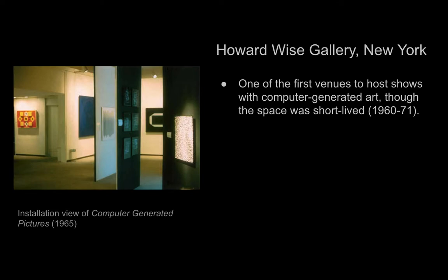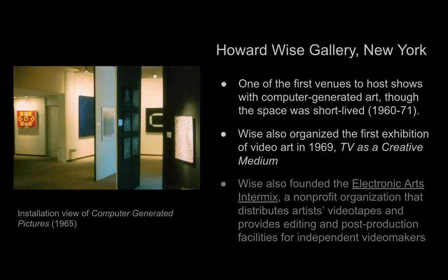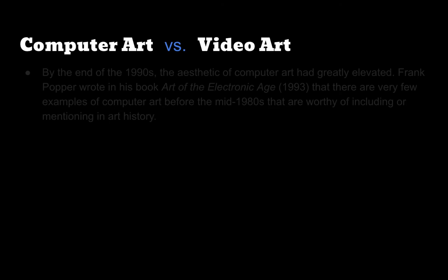The Howard Wise Gallery was one of the first venues to host shows with computer-generated art, though the space was short-lived — in existence for just over a decade, from 1960 to 1971. Wise also organized the first exhibition of video art in 1969 called TV as a Creative Medium, and he founded Electronic Arts Intermix, a non-profit organization that distributes artists' videotapes and provides editing and post-production facilities for independent video makers. Howard Wise supported early computer art and video art, but there are important distinctions between these two forms — they are related, but their histories are distinct.